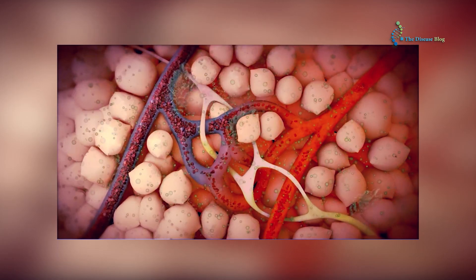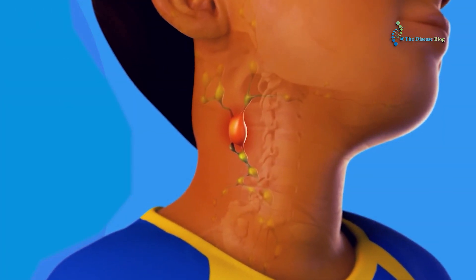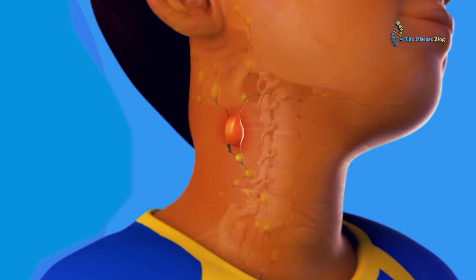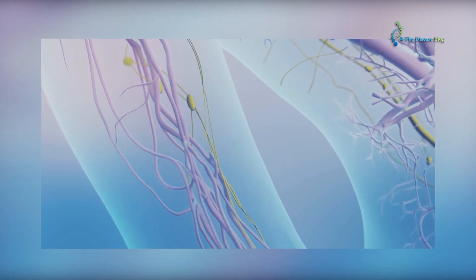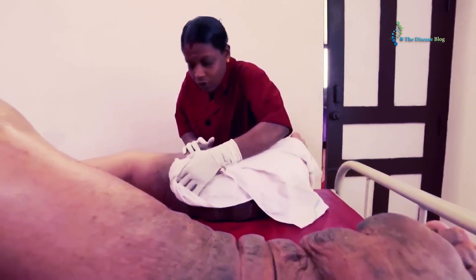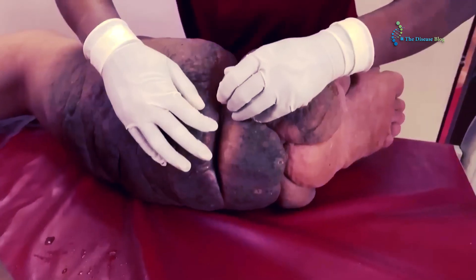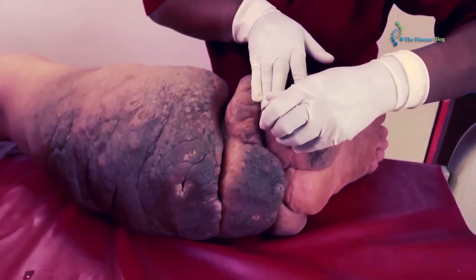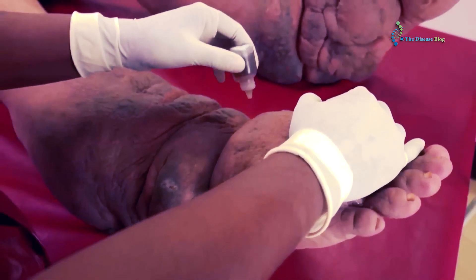As a result, the lymphatic system becomes weakened, obstructed, and unable to perform function properly. This obstruction results in the swelling and enlargement of lymph nodes due to the accumulation of lymph. The enlarged lymph nodes can be easily observed in certain body parts including limbs, breasts, and genitals.